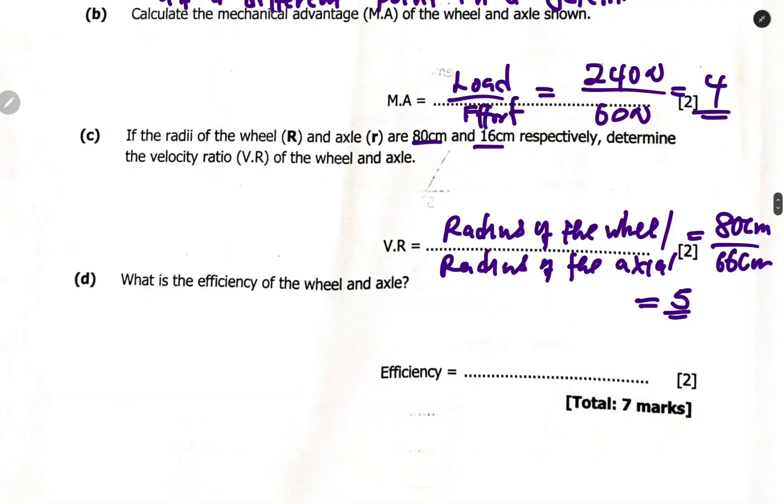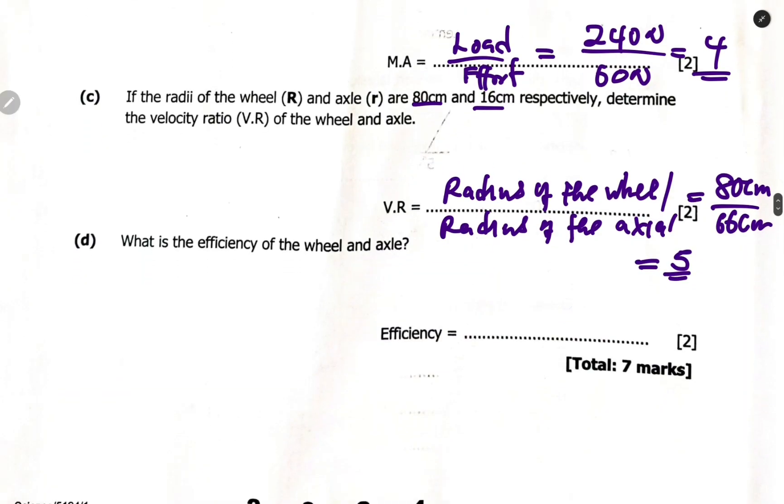Coming to efficiency, which is straightforward: efficiency equals mechanical advantage over velocity ratio multiply by 100. Our mechanical advantage is 4, velocity ratio is 5. So 4 divided by 5 is 0.8, multiply by 100 gives us 80 percent.